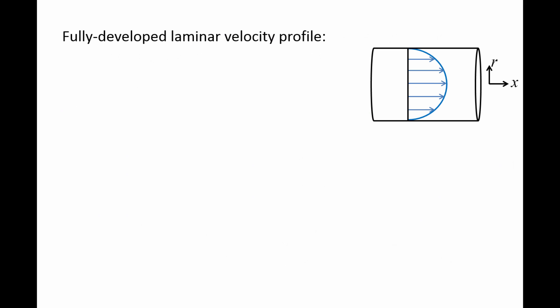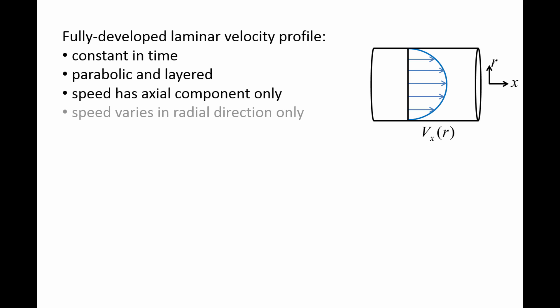For fully developed laminar flows, the velocity profile is constant in time. In a future video, we will prove that the laminar velocity profile is parabolic and layered, with each layer having a different velocity. The velocity only has an axial component Vx, and the magnitude of this component is a function of radius only.